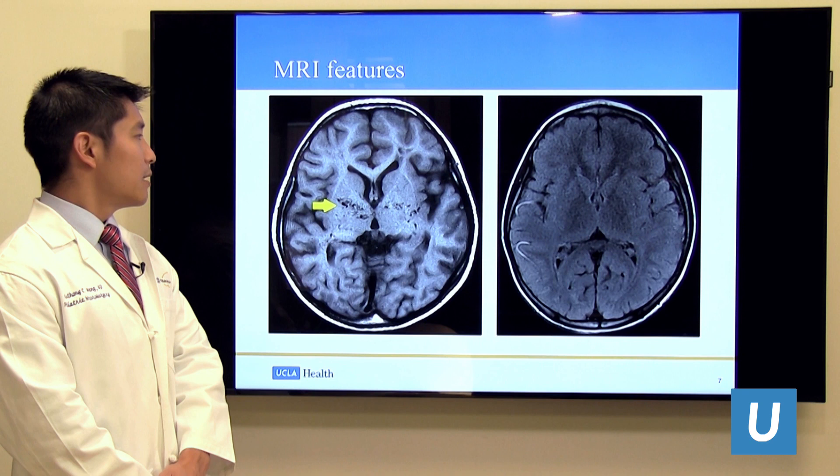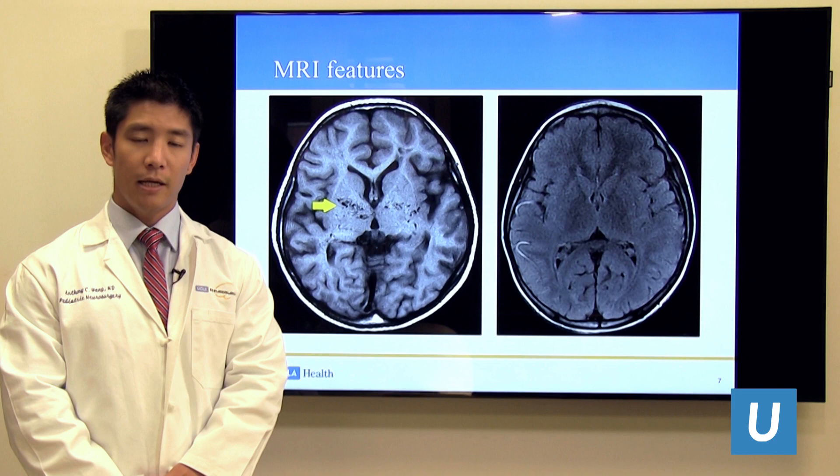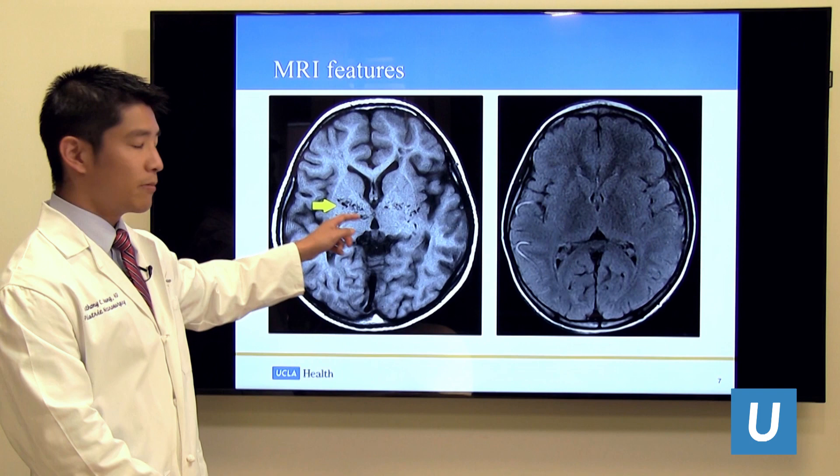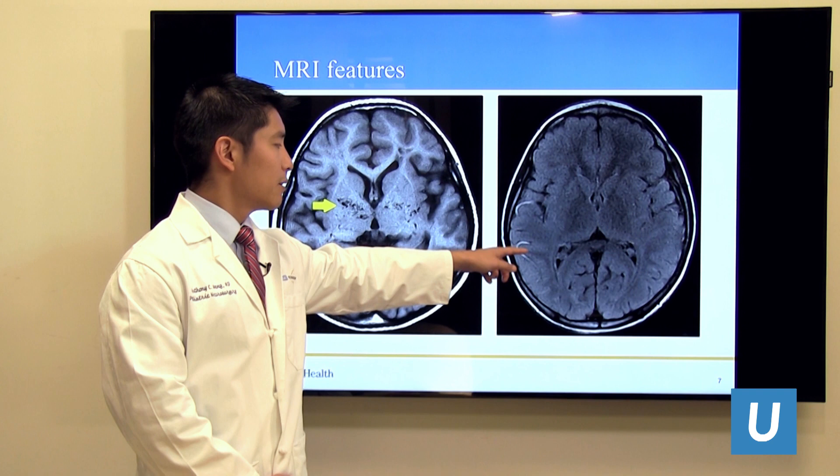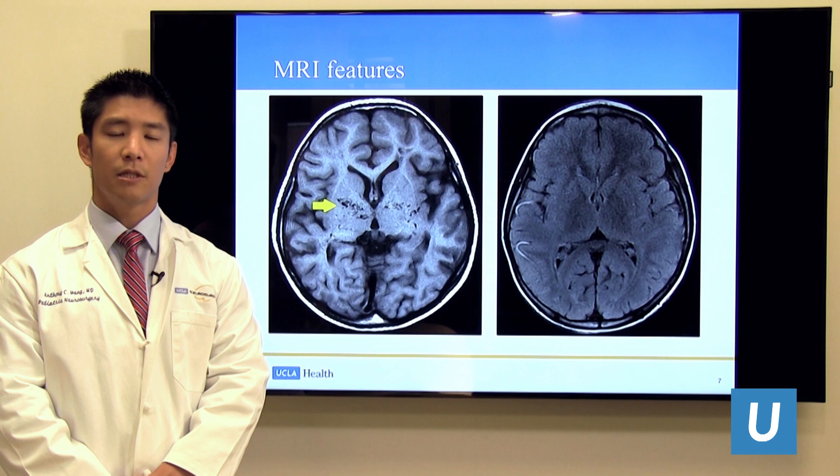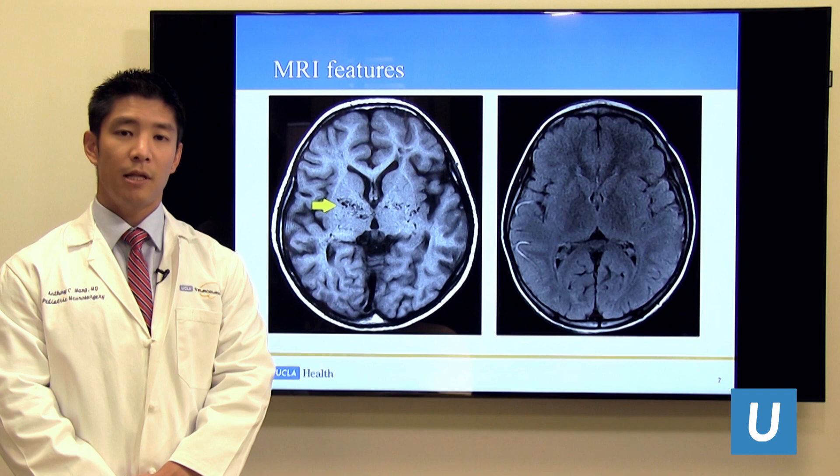These days, Moyamoya is primarily diagnosed based on MRI and MRA. Here you see some of the flow voids from the enlarged collateral vessels supplying the thalamus. And here you see what's described as the IV sign — engorgement of arterioles along the outside of the brain — which is a very reliable indicator that someone will progress and needs treatment of their Moyamoya.